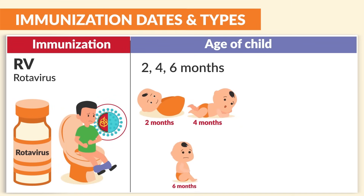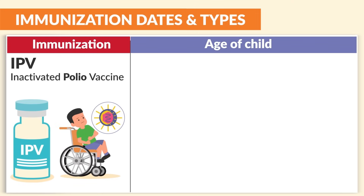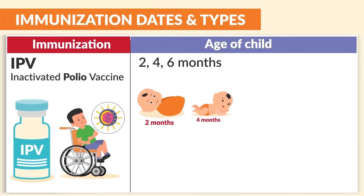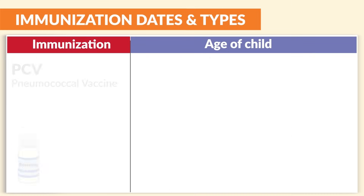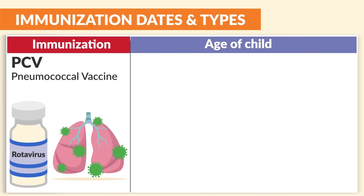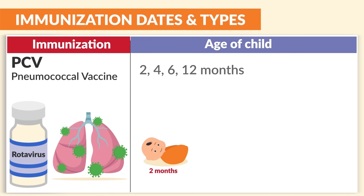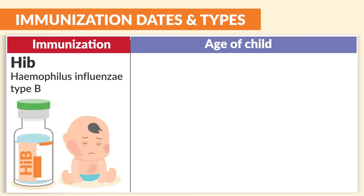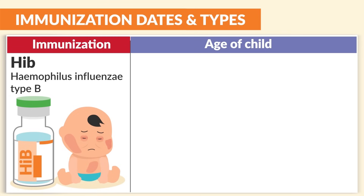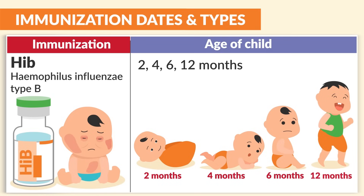RV (rotavirus) is given at 2, 4, and 6 months. Polio (IPV) is given at 2, 4, 6 months, as well as 4 to 6 years. Next, the pneumococcal vaccine (PCV), basically the pneumonia vaccine, is given at 2, 4, 6, and 12 months. Next is HIB (Haemophilus influenzae type b) vaccine — not HIV, but HIB — also given at 2, 4, 6, and 12 months.